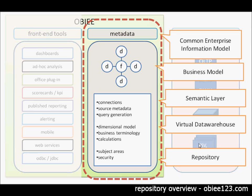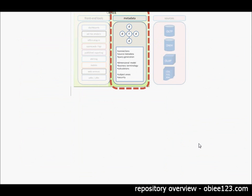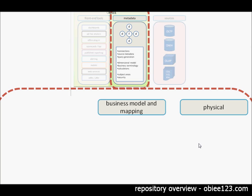Now let's zoom in to what this metadata in the middle in the red square consists of. So we're zooming out of this picture and we're going to have a deeper look into the metadata layer. Again this metadata or the repository consists of three layers: a physical layer, a business model and mapping layer, and a presentation layer.